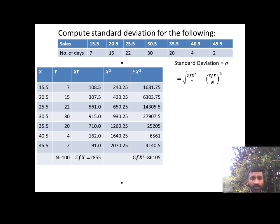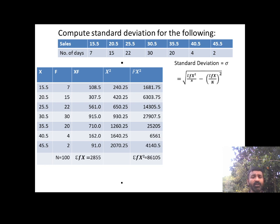Computing x² values: 15.5²=240.25, 20.5²=420.25, 25.5²=650.25. We then compute fx² for each row by multiplying x² by the corresponding frequency. The total sum of fx² comes out to 86,105.